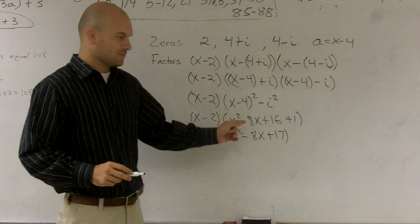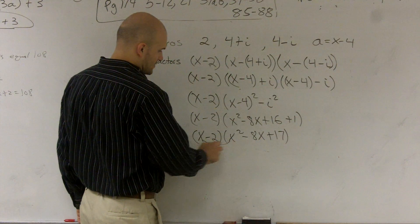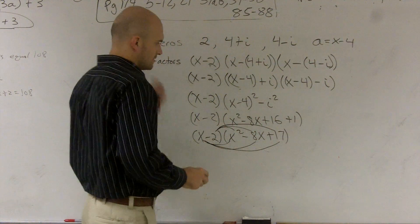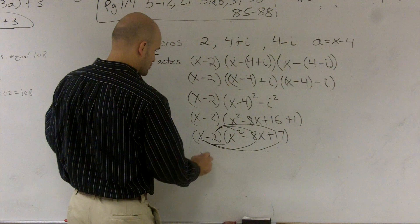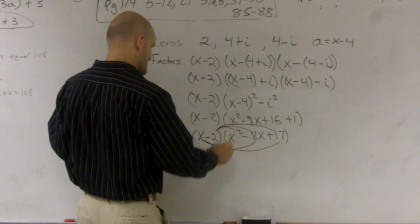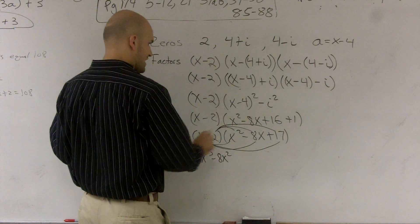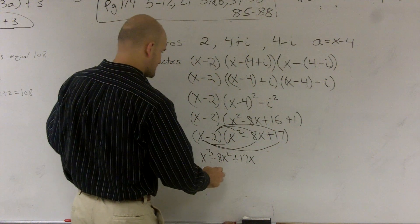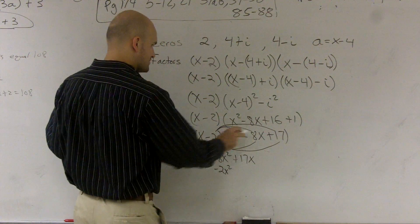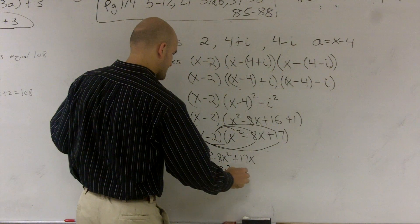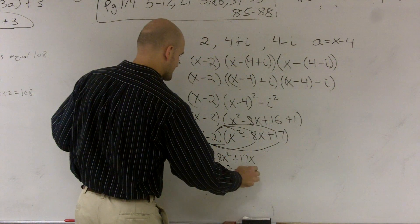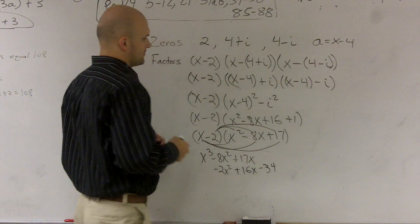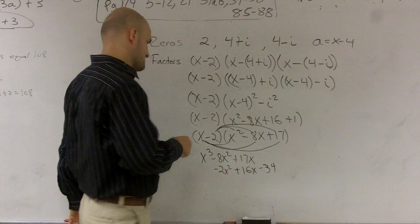Now I have to multiply my binomial times my trinomial. And again, we're just going to make sure you multiply every term times every term. So x times x² is x³. x times -8x is -8x². x times 17 is +17x. x-2 times x² is -2x². x-2 times -8x is +16x. And x-2 times 17 is -34.